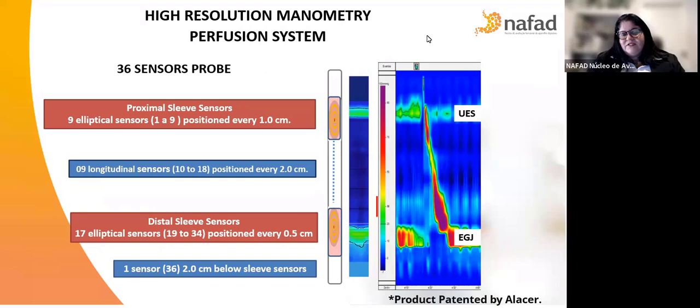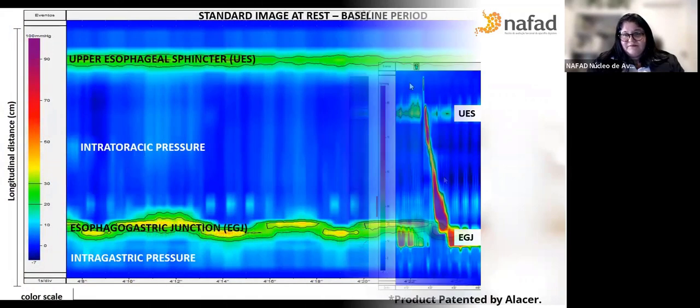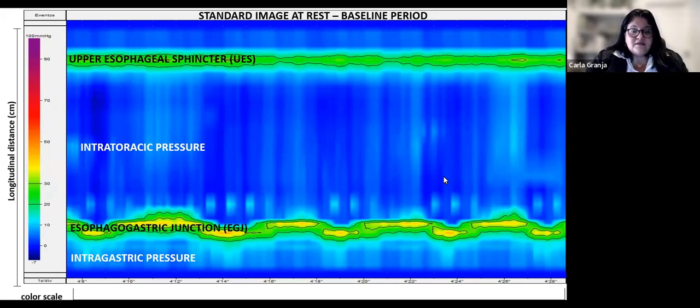Another idea that was great is the fact that, different from the non-perfusion systems, the probe presents an intelligent distribution of sensors. We have here two areas of elliptical sensors positioned in a smaller interval, and it permits to evaluate upper esophageal sphincter and especially esophagogastric junction accurately. So, we can see it's more sensible than probes that have sensors positioned just in longitudinal form. All images presented in the next slides are produced by exams we performed with this device.